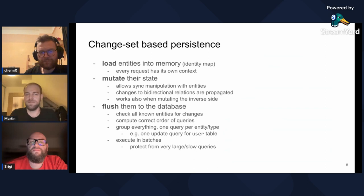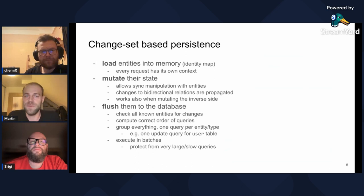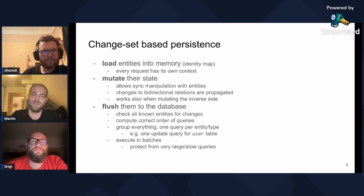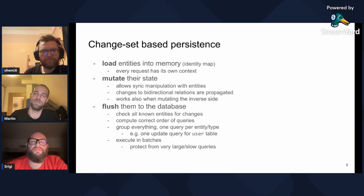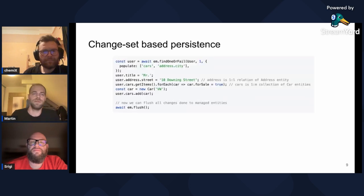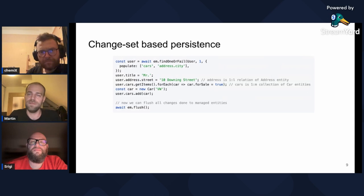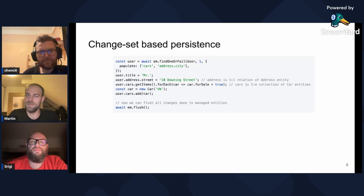Now back to the changeset-based persistence. What does it actually mean? The entity manager maintains an in-memory state of how the entity looks when you load it from the database. Then it lets you synchronously mutate the entity state, and when you call flush, it will compute all the necessary queries to synchronize the database state and run them, grouped and batched. Here is an example of that in action. We load the user entity, populate its card collection and address relation, then we make some changes to the entity graph, and lastly call flush.